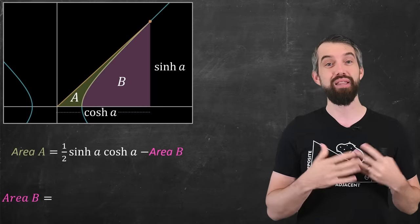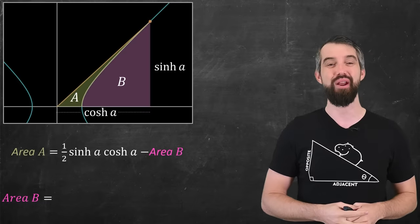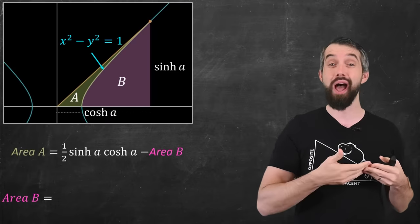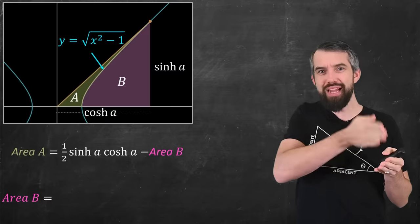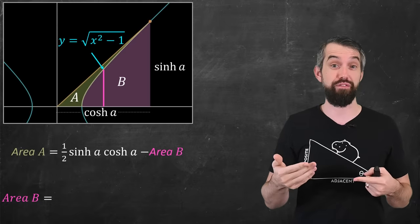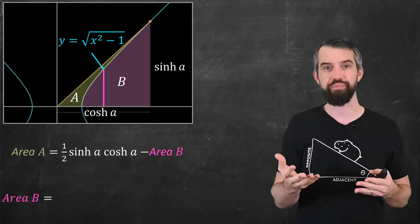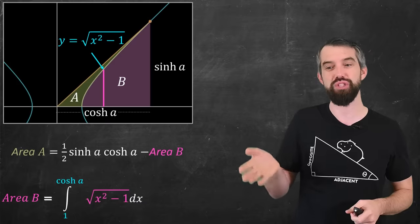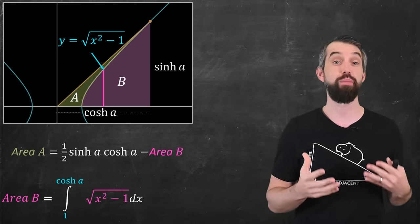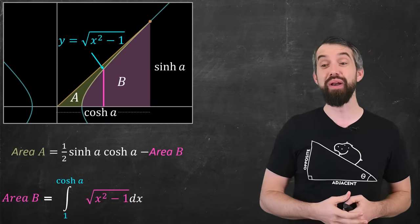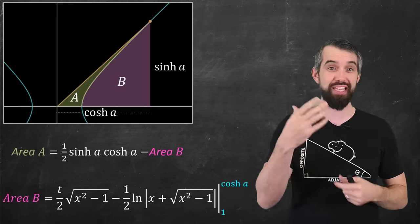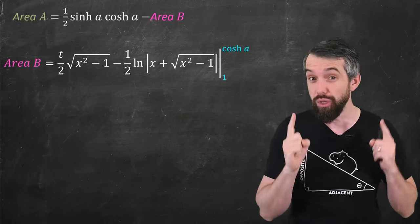The calculus students among you will find this a lovely integration exercise — that's how we compute areas. My curve is x squared minus y squared equal to 1, so y equals square root of x squared minus 1. If I slice region B into vertical strips, each strip goes from 0 up to a height of square root of x squared minus 1. I add up all those vertical strips — integrating from 1 out to hyperbolic cosine — and I'll spare you the details of evaluating that integral. But when I plug in the bounds, the lower limit of 1 makes everything zero, including the logarithm of 1.